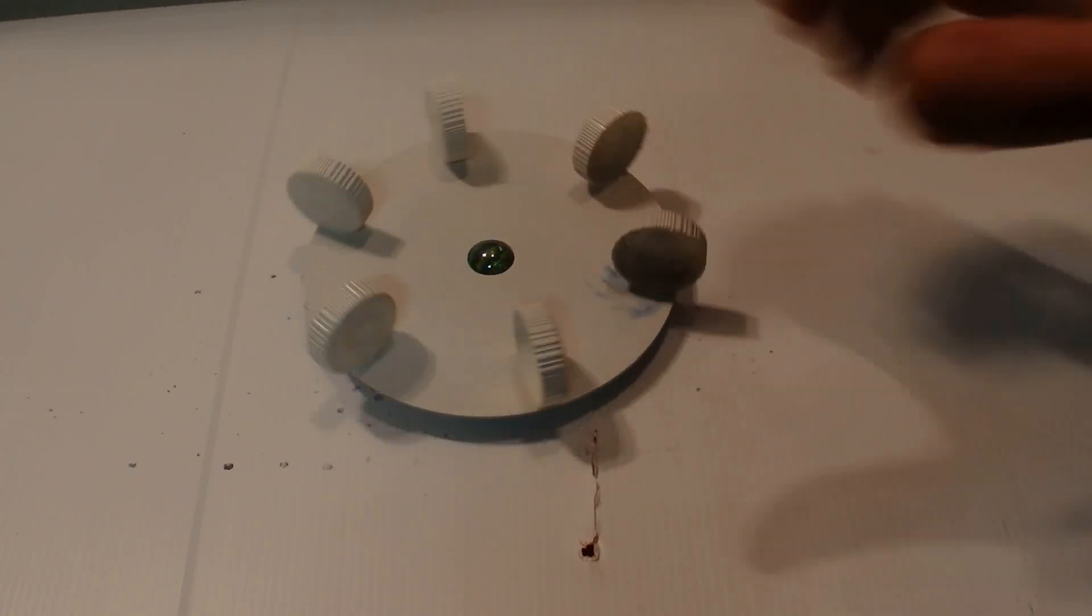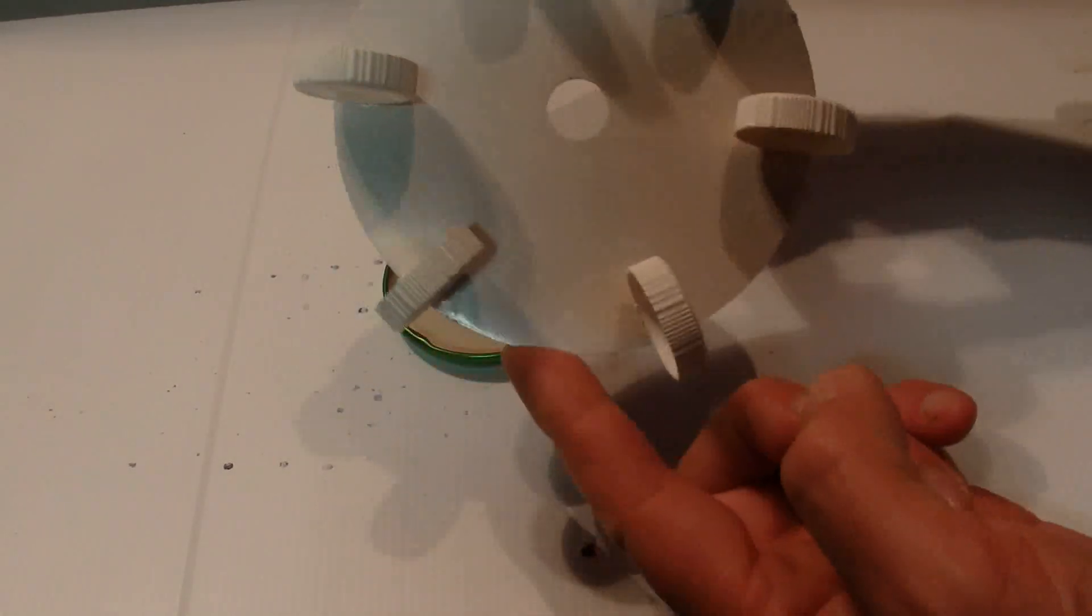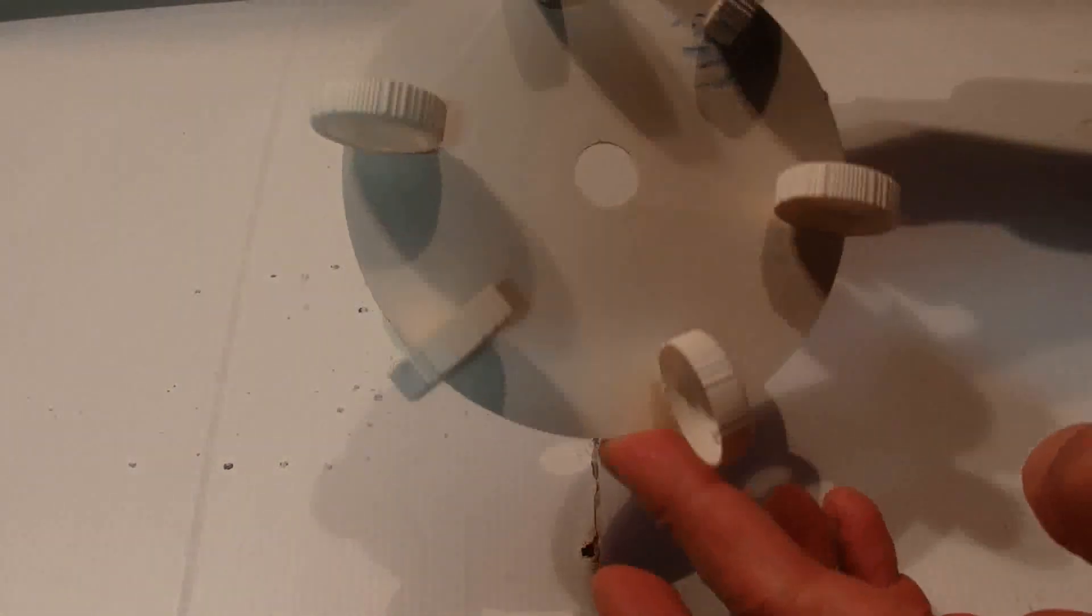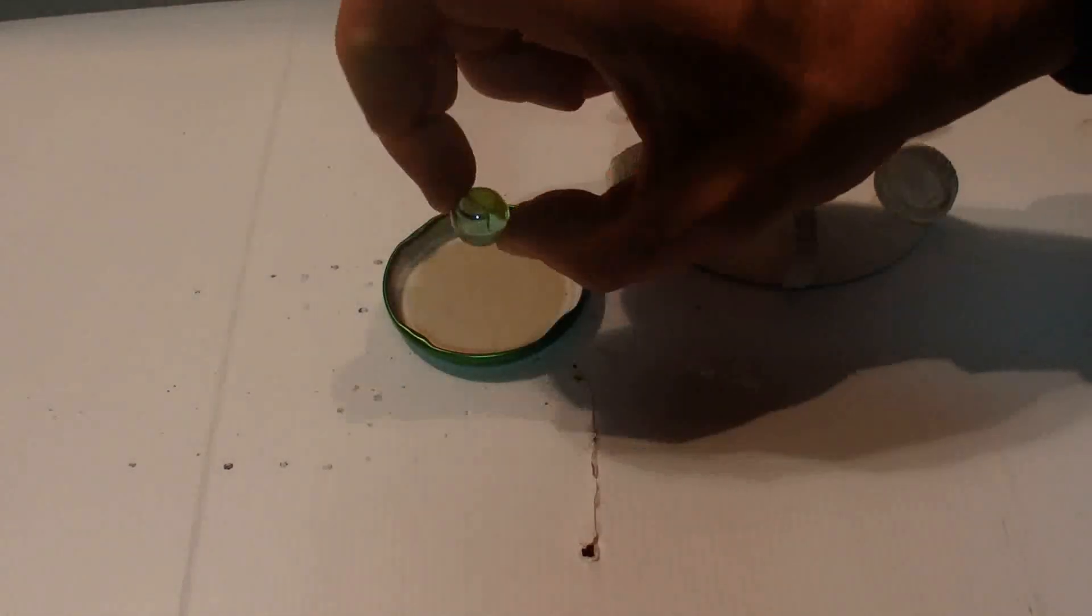Hi there, today I'm going to show you how to make a simple anemometer. All you need is an old CD or DVD disc, and basically just stick six caps around the edge and it just spins on a marble.